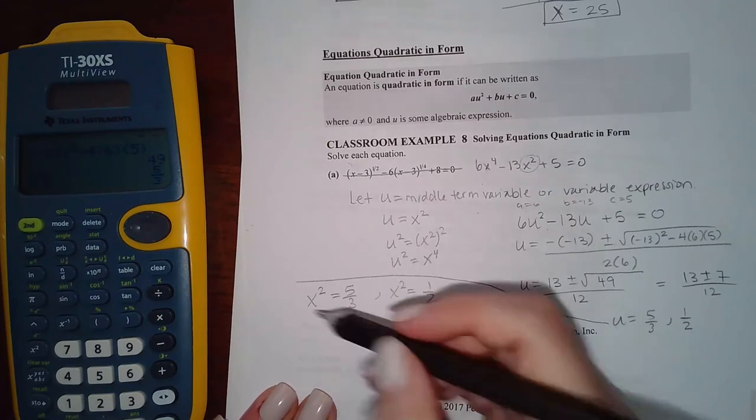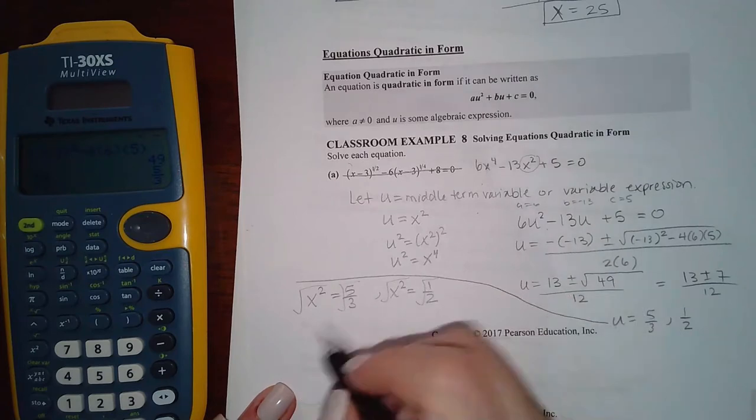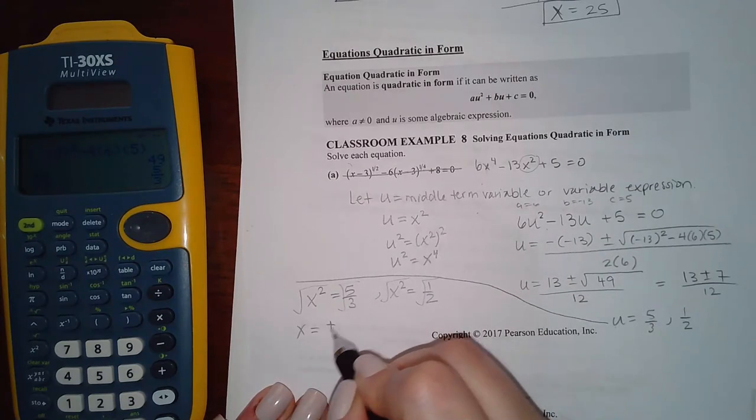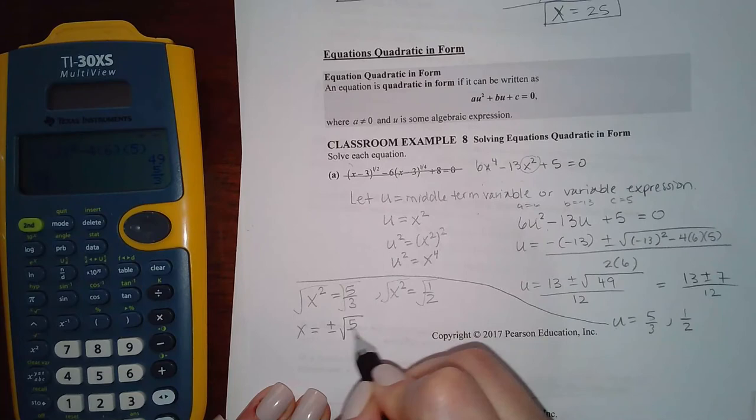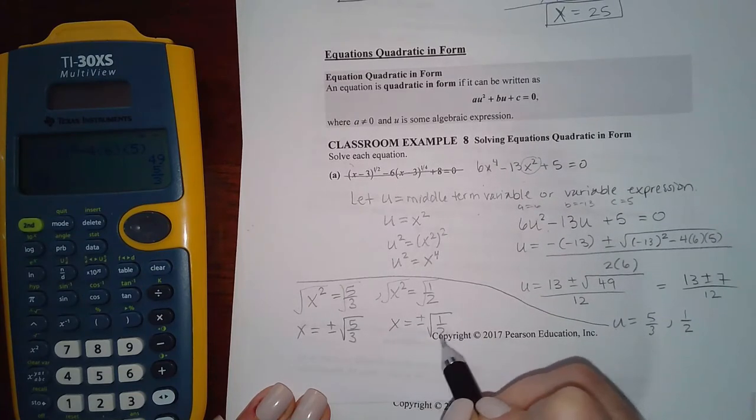And how do you solve that? You take the square root of both sides. But when you do that, remember, you get plus or minus the square root of 5 thirds. And here you get plus or minus the square root of 1 over 2.